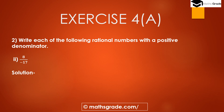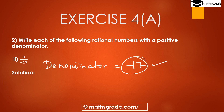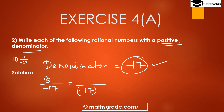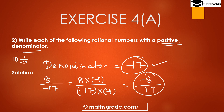Part 2: 8 divided by minus 17. The denominator is minus 17, which is negative. We multiply minus 17 with minus 1; minus multiplied by minus is plus, giving us 17 as the positive denominator. We also multiply the numerator 8 with minus 1 to get minus 8. So, the rational number with positive denominator of 8 divided by minus 17 is minus 8 divided by 17.